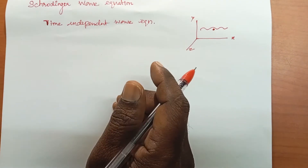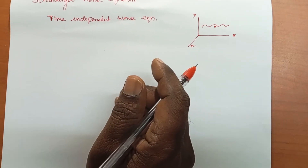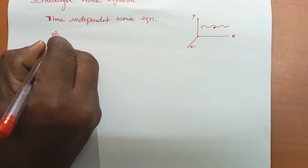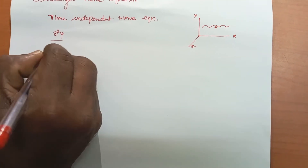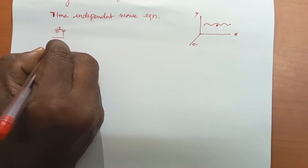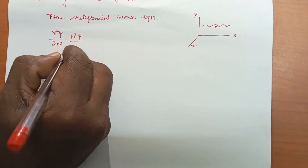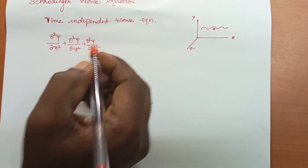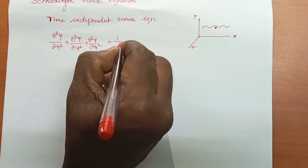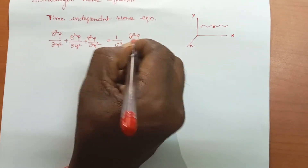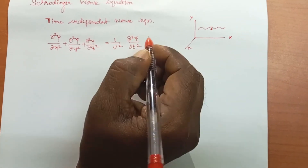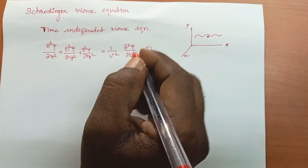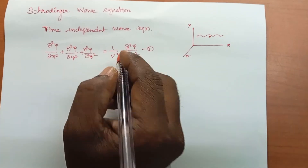According to classical mechanics, the wave equation is: ∂²ψ/∂x² + ∂²ψ/∂y² + ∂²ψ/∂z² = (1/v²)(∂²ψ/∂t²). This is equation number 1, where small v is the wave velocity.